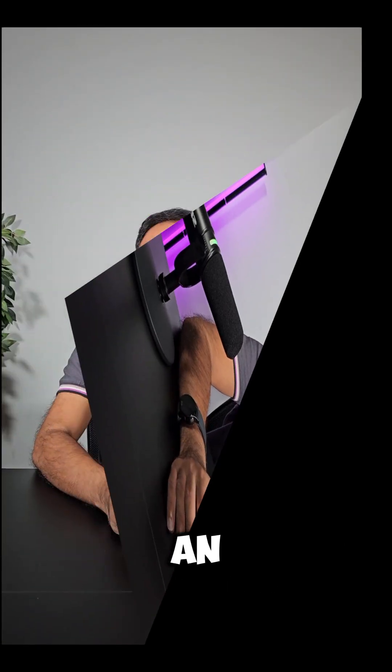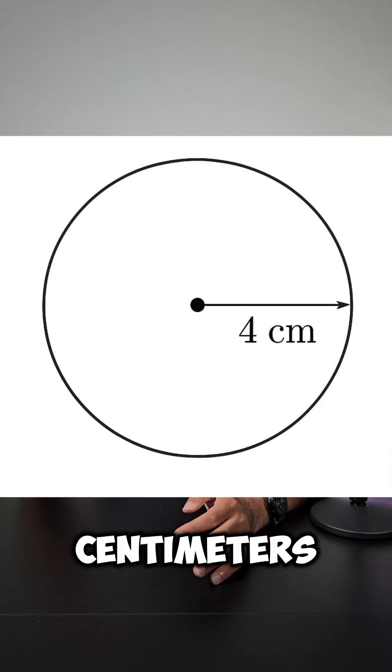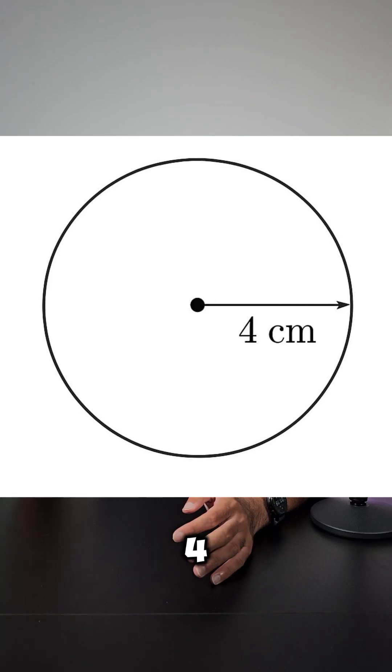So let's do an example together. The set of all points four centimeters from a given point is a circle with radius four centimeters.